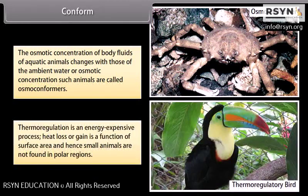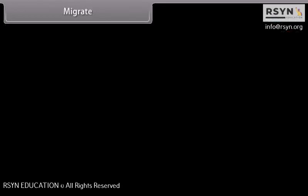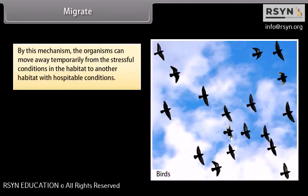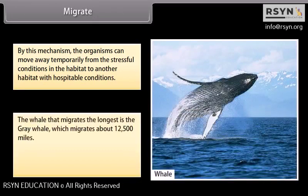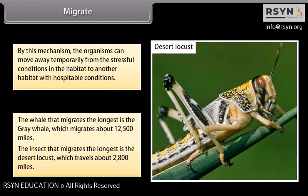Thermoregulation is an energy-expensive process. Heat loss or gain is a function of surface area, and hence small animals are not found in polar regions. By migration, organisms can move away temporarily from stressful conditions in their habitat to another habitat with hospitable conditions. The grey whale migrates the longest among whales, travelling about 12,500 miles, while the desert locust is the longest-migrating insect, travelling about 2,800 miles.